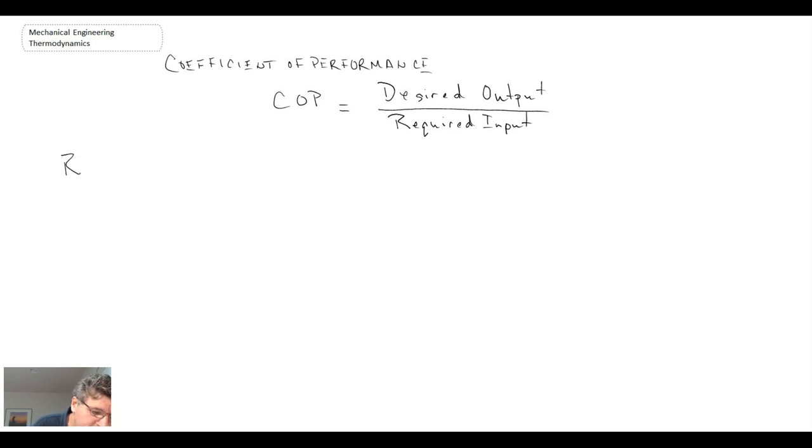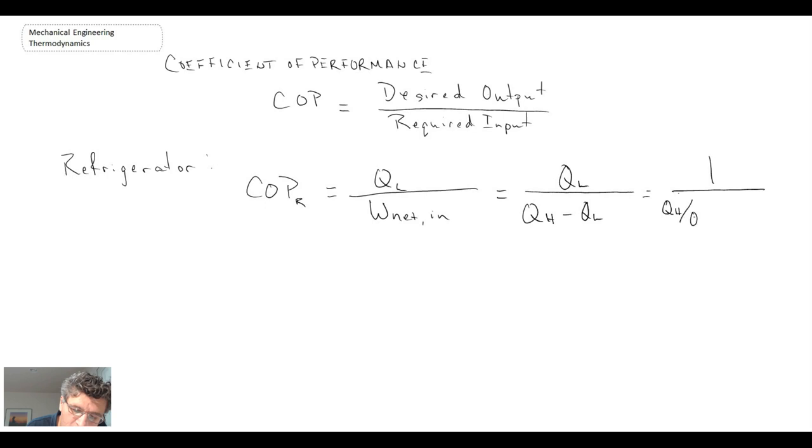So looking at a refrigerator, we would have the coefficient of performance of a refrigerator. I'll write it as COP subscript capital R. QL is the desired and the required input is the work that we have to do, which we could then rewrite that as QL over QH minus QL. And so that becomes an expression for the coefficient of performance of a refrigerator.